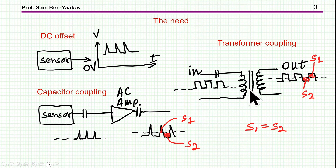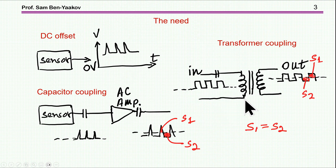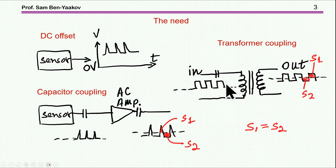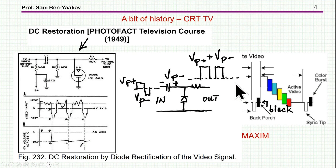Another example is the transformer. If you feed a signal referenced to zero — like the output of a gate driver, zero to some positive value — you have to pass it through a capacitor to avoid saturation of the transformer. At the output you get an AC signal because only the AC passes through, and the area S1 equals S2. Depending on the duty cycle there may be a shift one way or the other, so in all these cases there is a need to restore the signal to a given reference, sometimes zero or sometimes another reference level.